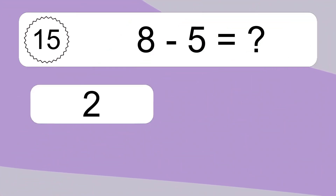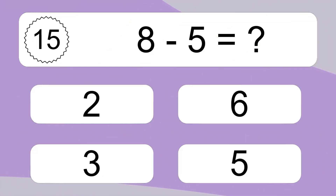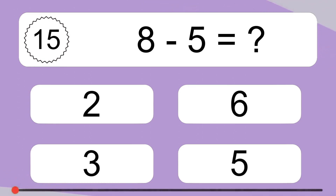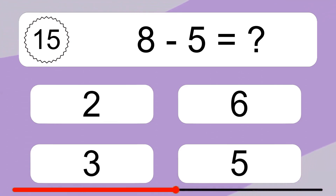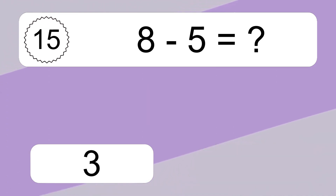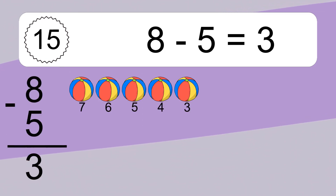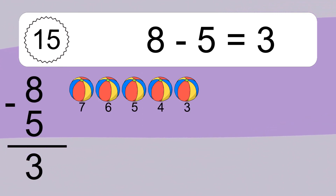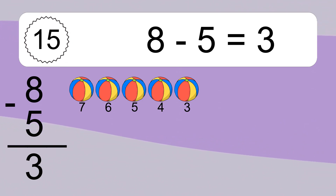8 minus 5 equals what? 8 minus 5 equals 3. Let's count it: 7, 6, 5, 4, 3.